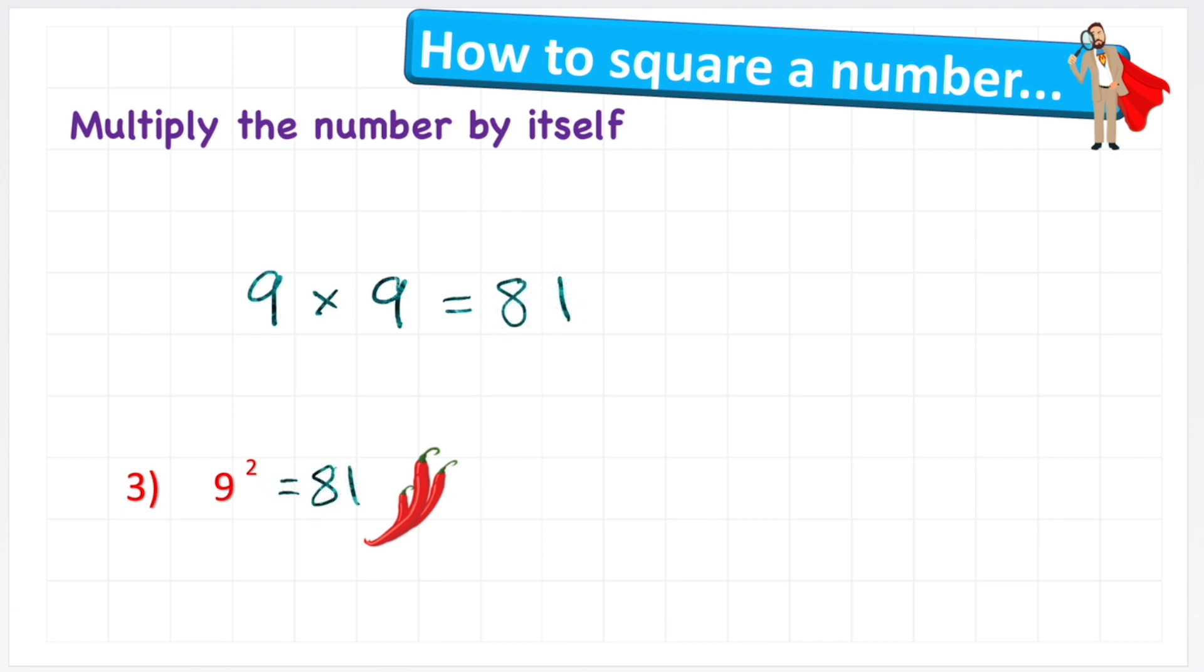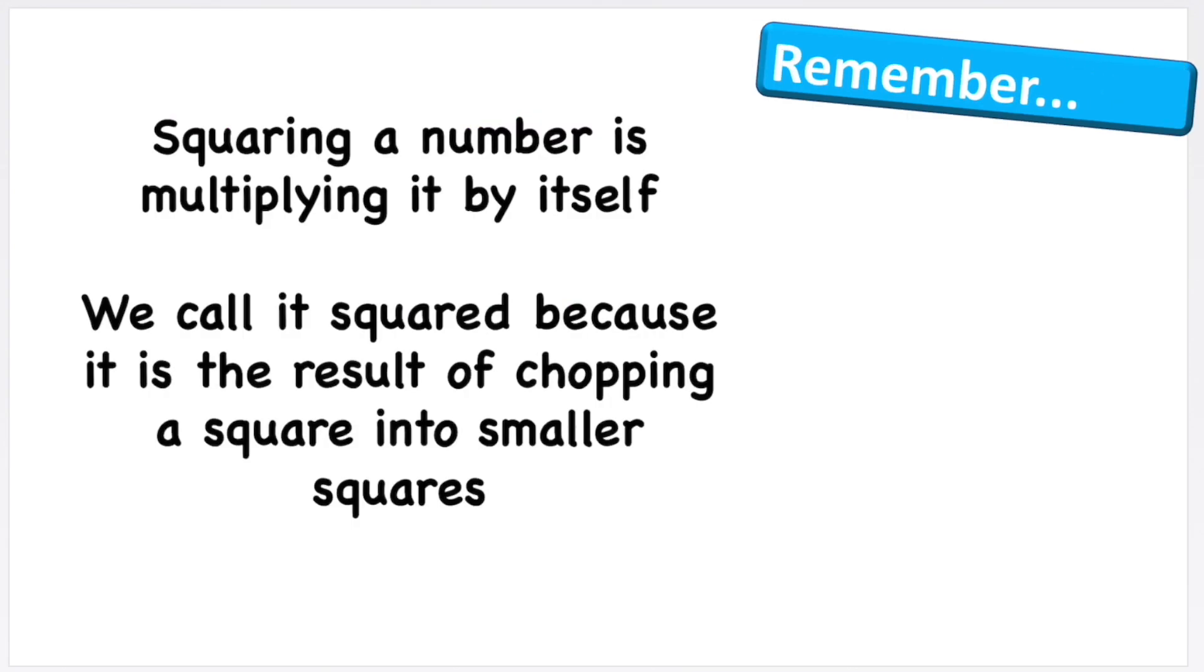And if I took the time to build up my big square, we would be able to prove that. Okay, so what do we need to remember about squaring a number? Squaring a number is multiplying it by itself, and we call it squared because it's the result of chopping a square into those smaller squares.